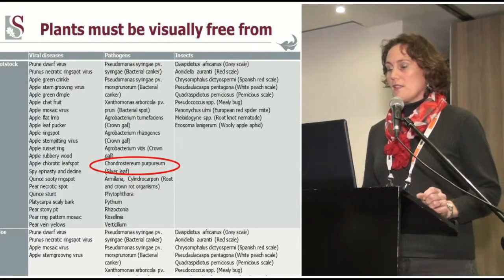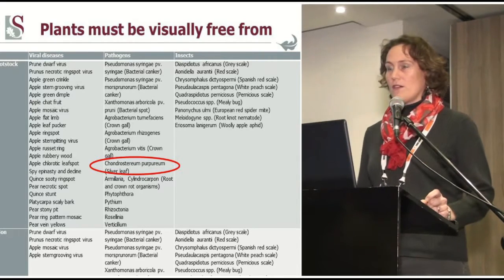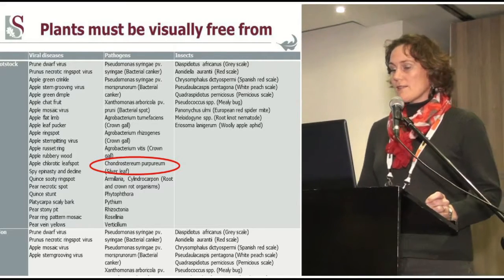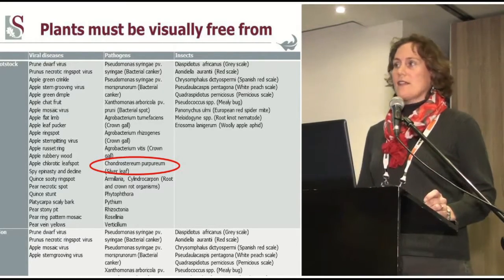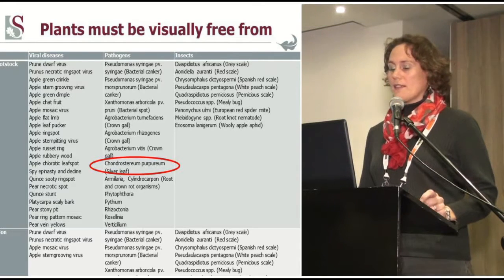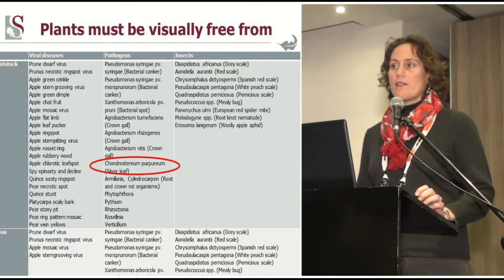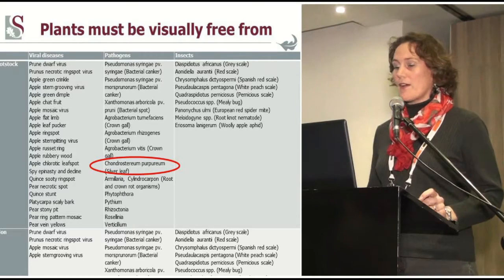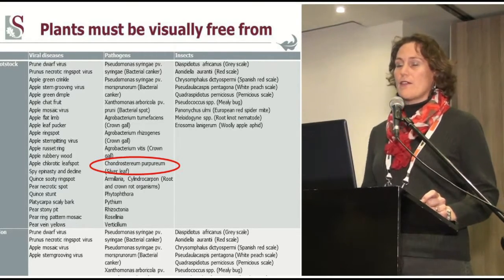What these inspectors must look for are a wide variety of diseases listed in a table — viral diseases, pathogens, and insects. For viral diseases, the Scheme has a specific system where mother blocks are screened and leaf samples are tested with ELISA and PCR for specific viral diseases, to make sure the plant material is free from viruses.